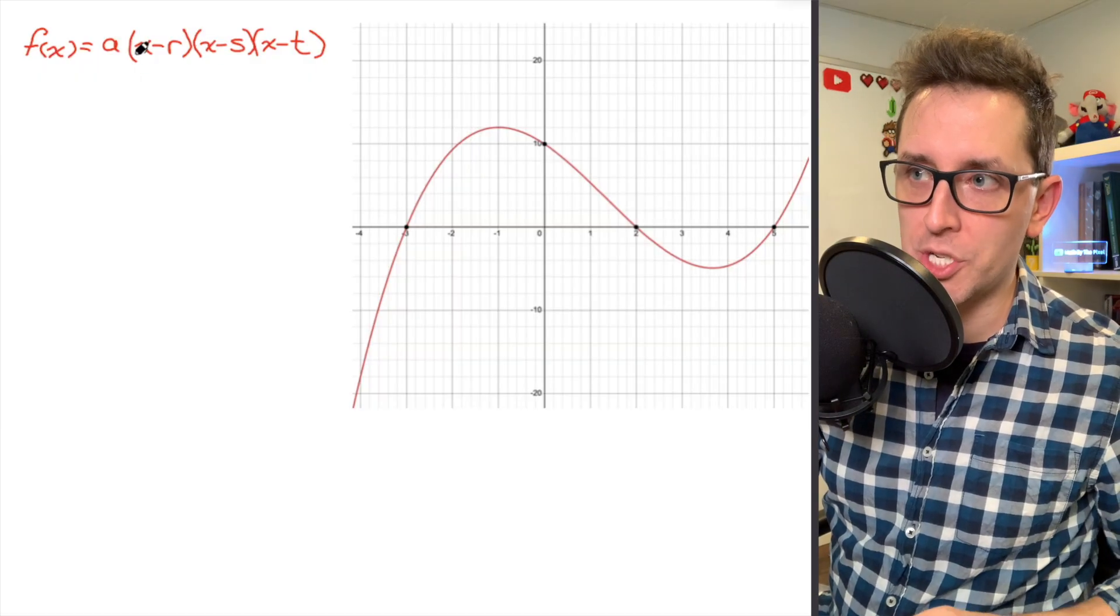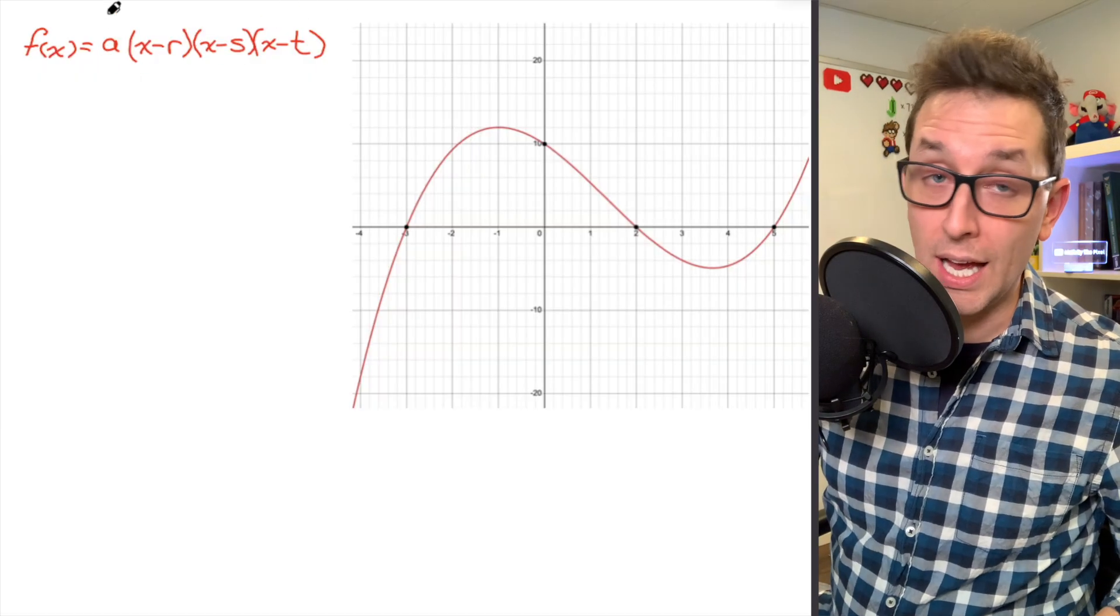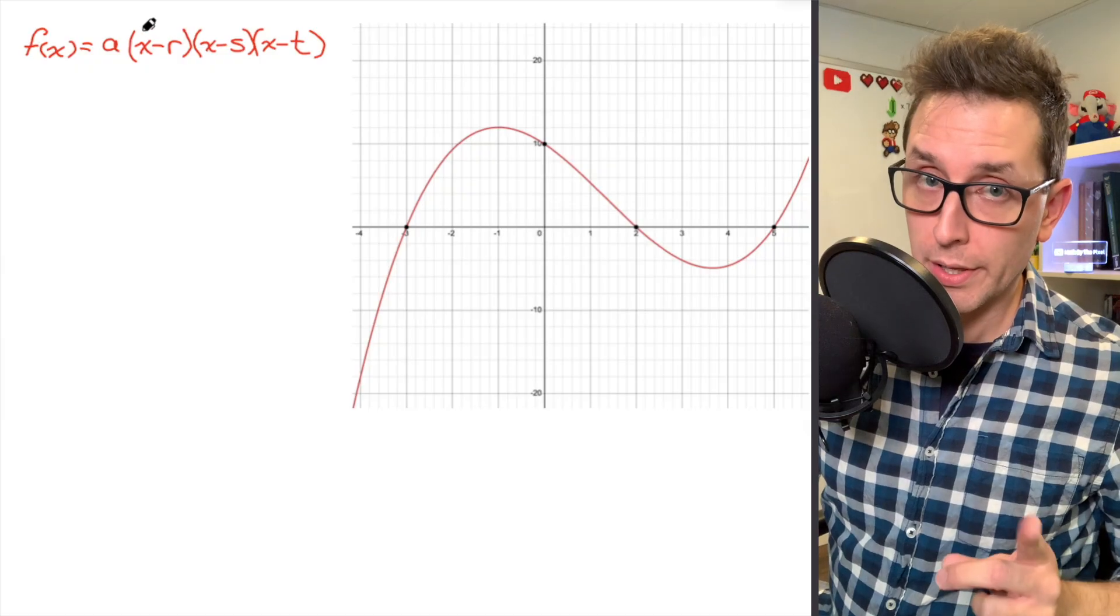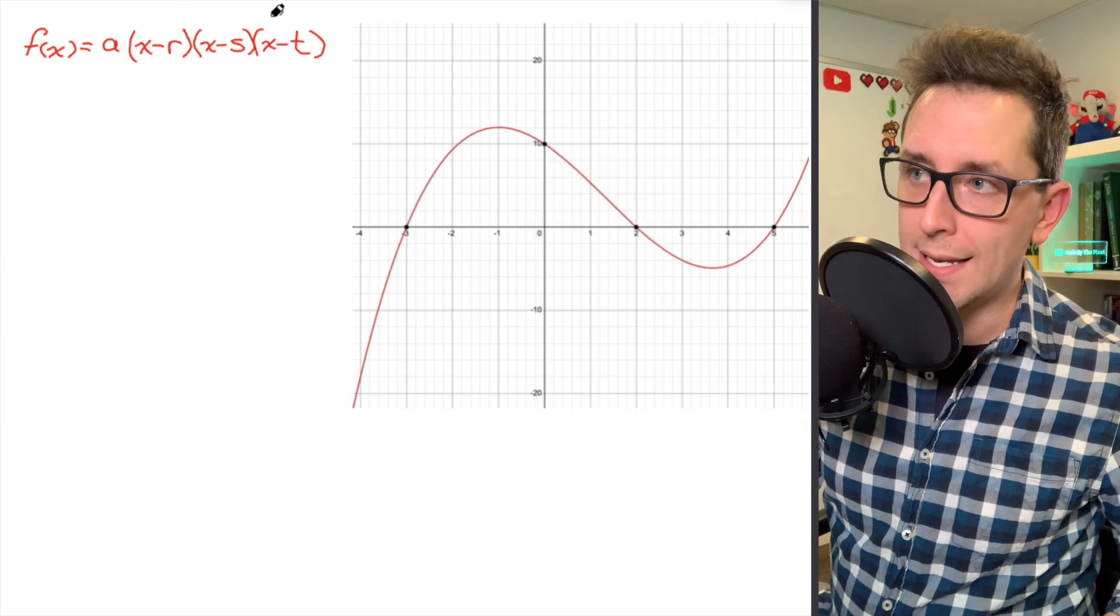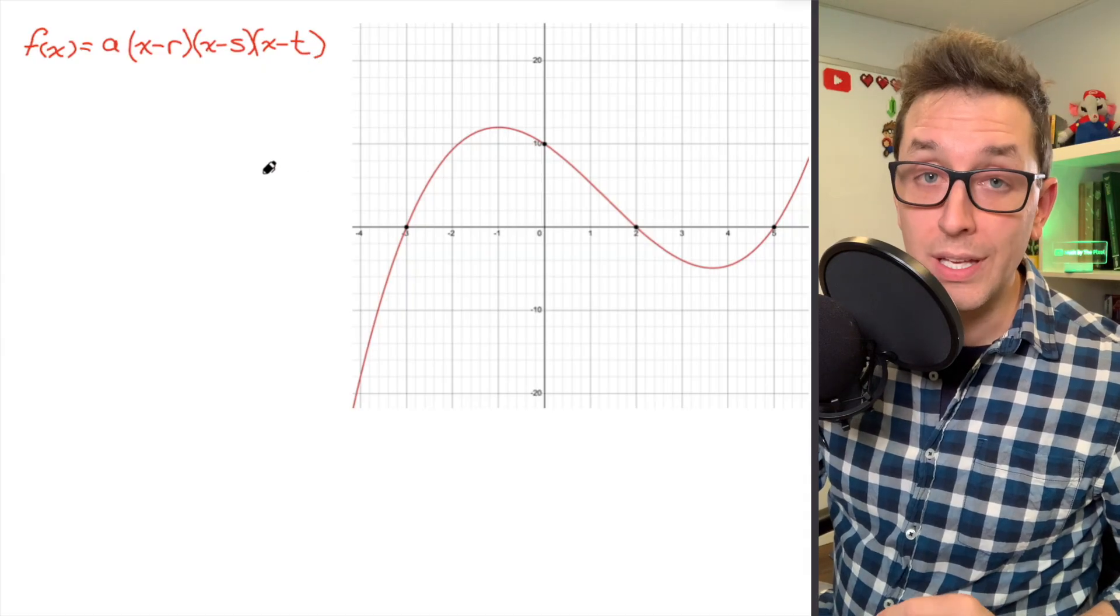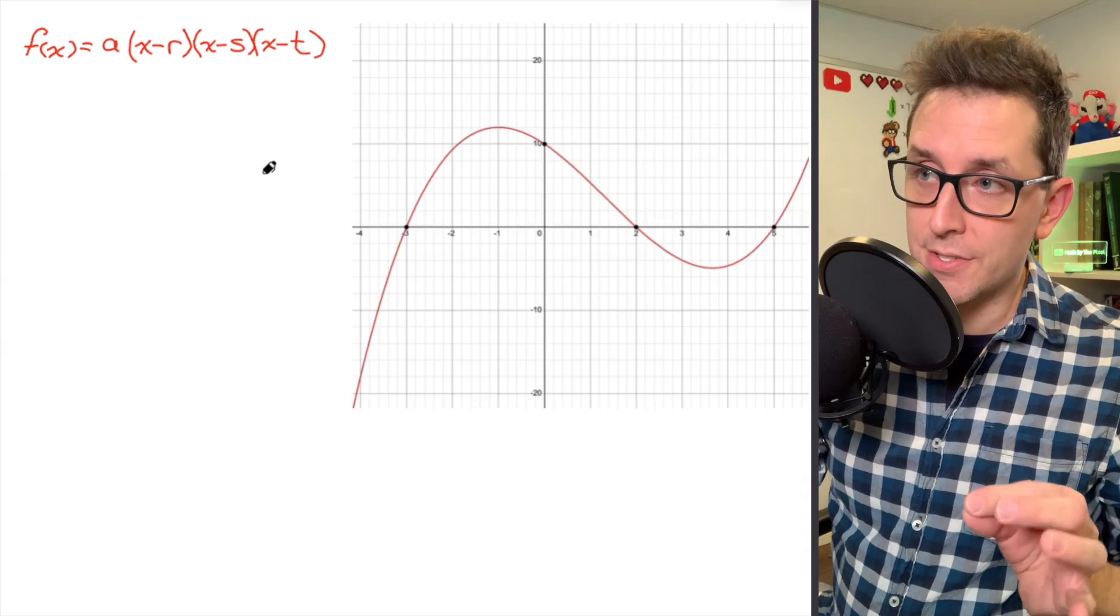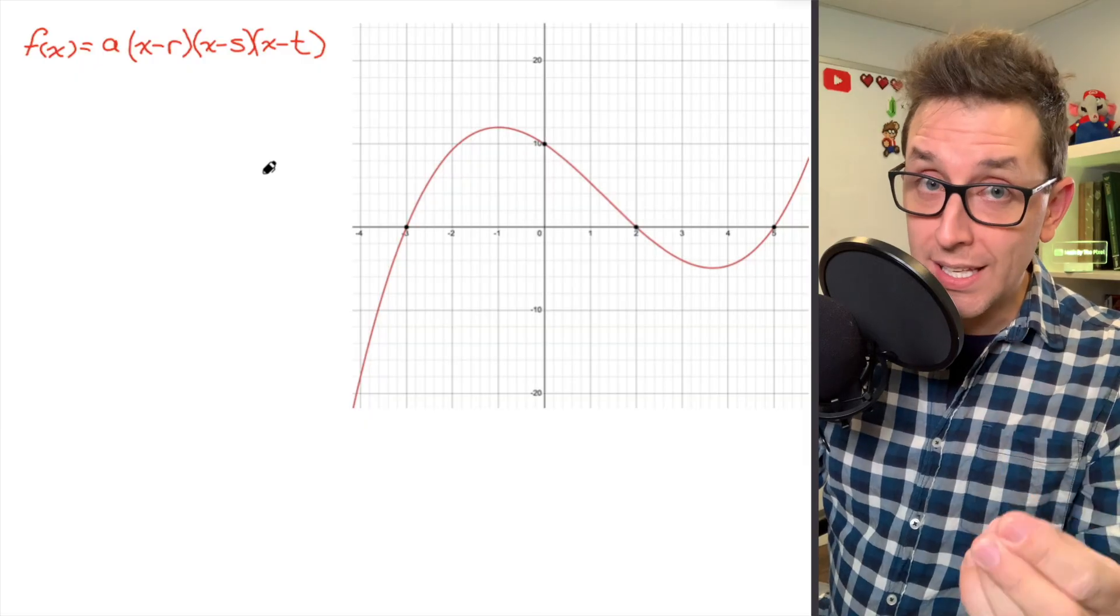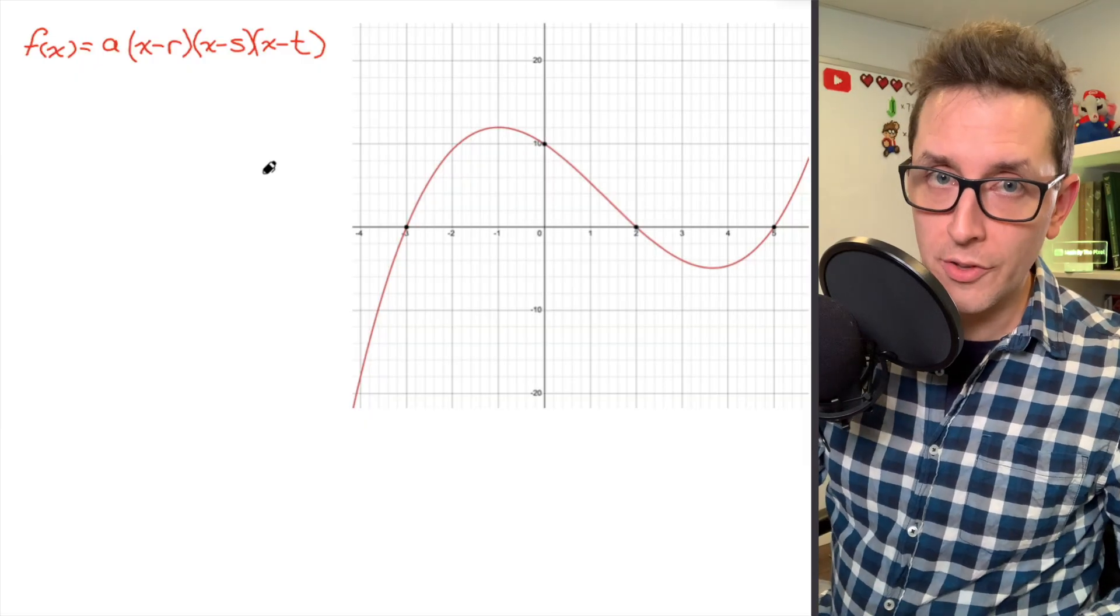Now, you'll see that this factored form equation has a few parameters that are missing. I have this a value at the beginning, which is really important, and then I have these values of r, s, and t. The values of r, s, and t are going to correspond to the x-intercepts of the polynomial. As it turns out, the x-intercepts are going to be key here to find the equation of this polynomial function.